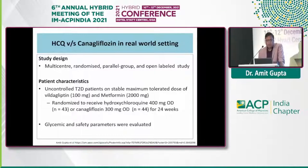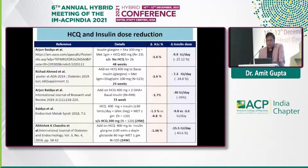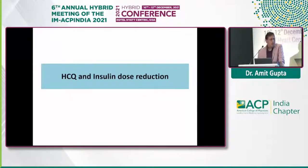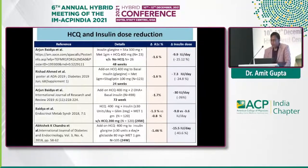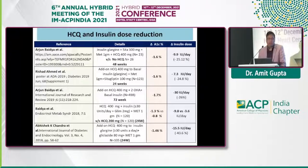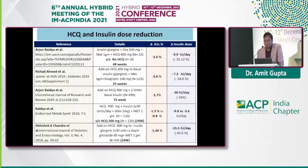Some real-world data is also available with canagliflozin combinations. Importantly, because HCQ reduces inflammation and inhibits insulin degradation, we often need to reduce insulin doses when adding HCQ to a patient already on insulin. Studies show a minimum delta reduction of about 10 units per day, and one study by Arjun et al. found insulin requirements came down by 30 international units per day with a significant HbA1c improvement. Clinicians should remember that insulin doses may need to be reduced when initiating HCQ.